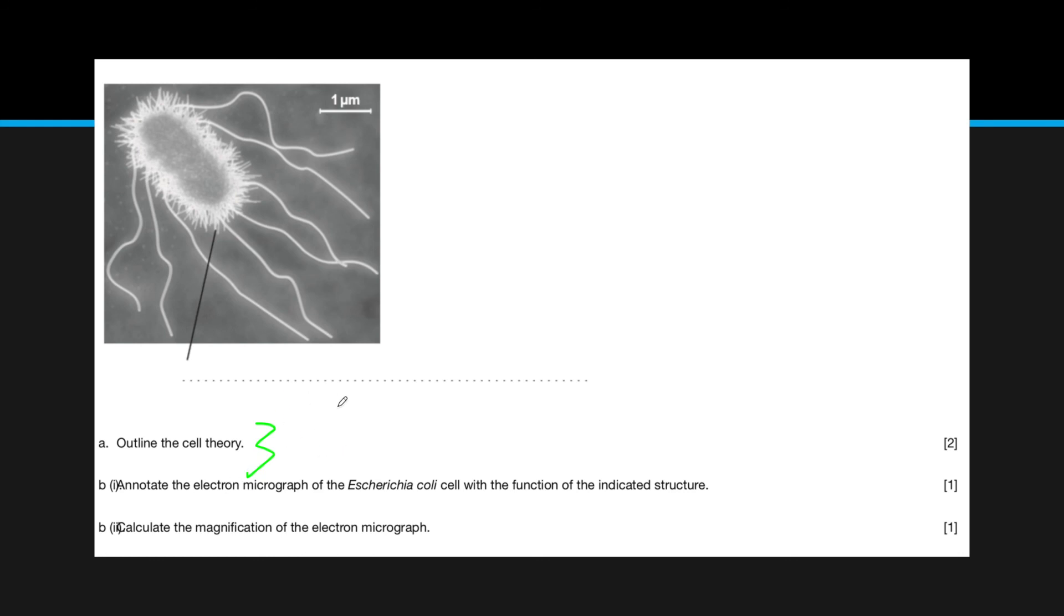All things are composed of cells, a cell has to come from another cell, and cells are the most basic unit of life. You'll notice on the side here marks—marks are the amount of points you can get for answering that question correctly. Since there's three different things here but only two marks, most likely you'll only get one mark for two correct things and two marks for three correct things.